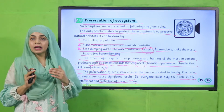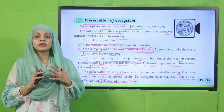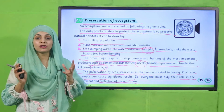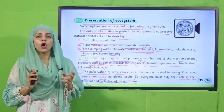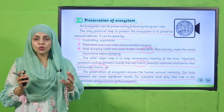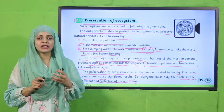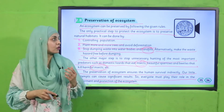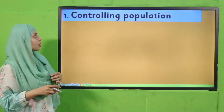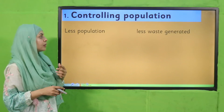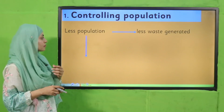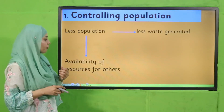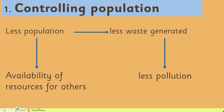We should all play our role to preserve the natural ecosystem. We should not overdo anything from nature and should stay close to nature. Controlling population means less waste, more availability of resources for others, and less pollution — this gives us many benefits.